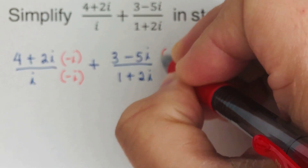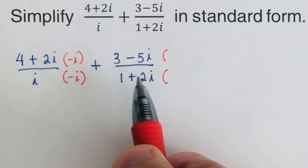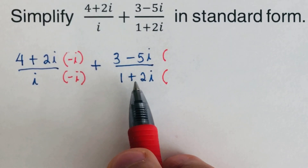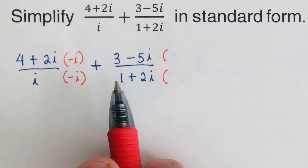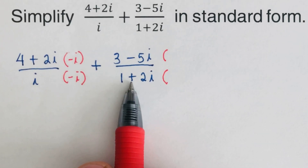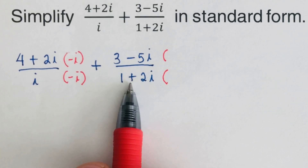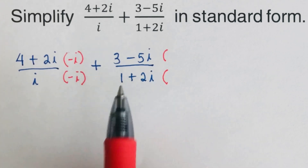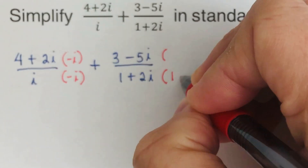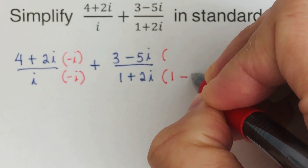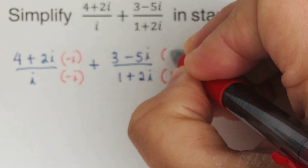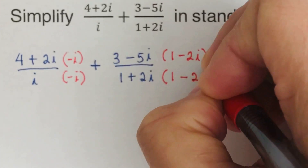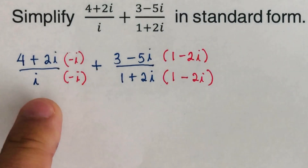For the second expression, we multiply by the complex conjugate of its denominator. To get that conjugate, we switch the sign of the bi part of the denominator, which gives us negative 2i. So the conjugate is 1 minus 2i, and we multiply both the top and bottom by 1 minus 2i.